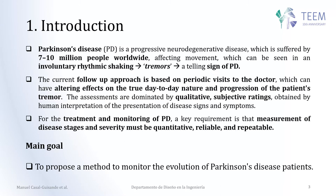Parkinson's is a well-known disease that is suffered by 7 to 10 million people worldwide. It is known to affect movement and it can be seen in involuntary rhythmic shaking, also known as tremors, which are a telling sign of Parkinson's disease.